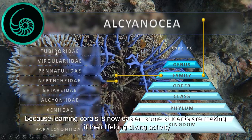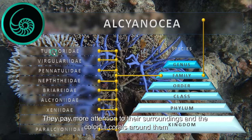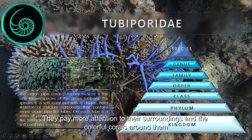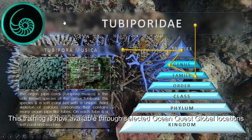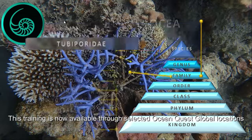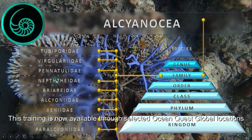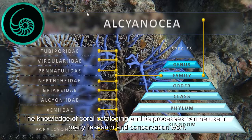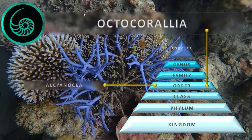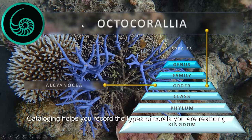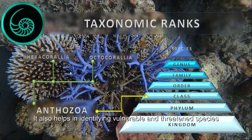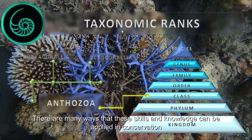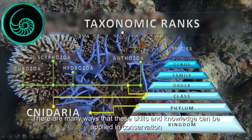Because learning corals is now easier, some students are making it their lifelong diving activity. They pay more attention to their surroundings and the colorful corals around them. This training is now available through selected OceanQuest Global locations. The knowledge of coral cataloging and its processes can be used in many research and conservation works. Cataloging helps you record the types of corals you are restoring, and also helps in identifying vulnerable and threatened species.